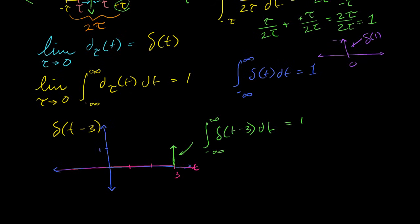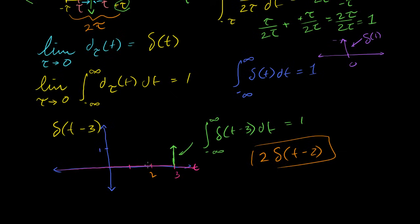Let's say I wanted to graph 2 times the Dirac delta of t minus 2. I go to t equals 2, where you get the Dirac delta of 0 — that's where the spike occurs. Multiplying by 2 means the area is twice as large, so we draw the arrow up to 2 to indicate the area under this spike is 2. Both spikes go to infinity, but this one has twice the area.